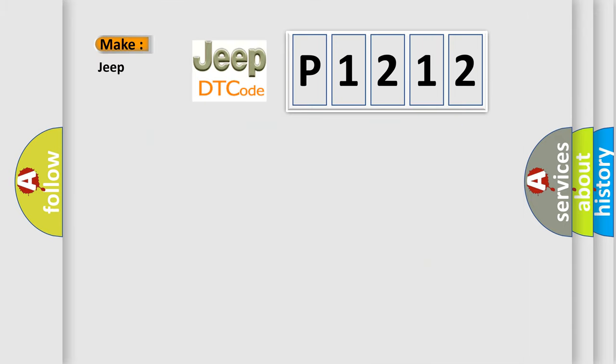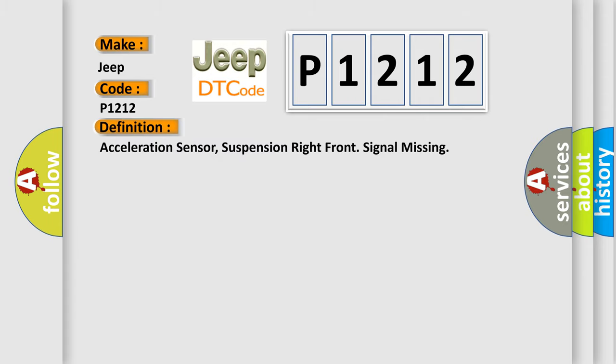So, what does the diagnostic trouble code P1212 interpret specifically? The basic definition is acceleration sensor, suspension right front signal missing.